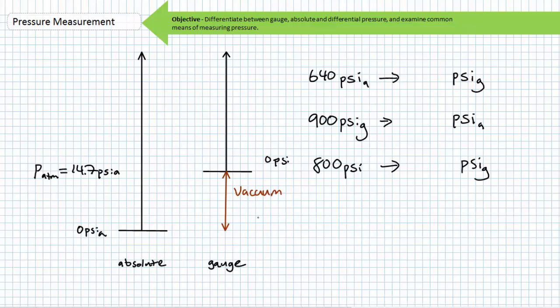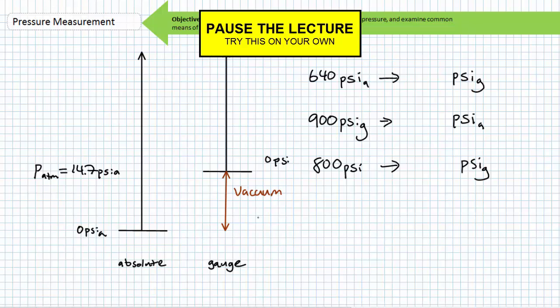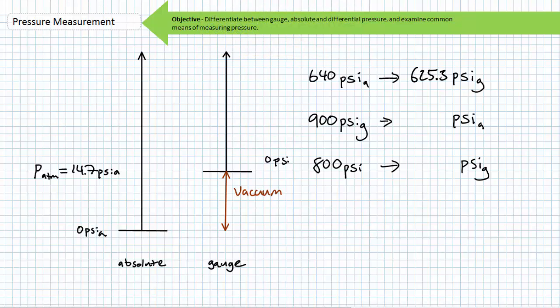Let's put your understanding of this simple concept to the test. Given the following pressure measurements, convert to the desired scale. Don't make this hard and don't dork this up. By all means, pause the lecture and take your best shot. A reading of 640 PSI absolute is equivalent to 625.3 PSI gauge. A reading of 900 PSI gauge is equivalent to 914.7 PSI absolute. Finally, 800 PSI gauge is equal to 800 PSI gauge. Again, units of PSI without a modifier is assumed to be gauge pressure. I must again emphasize that fluid power systems customarily use gauge pressure with common atmospheric conditions being the zero reference.